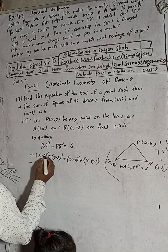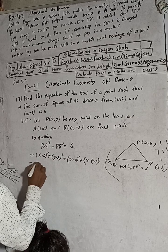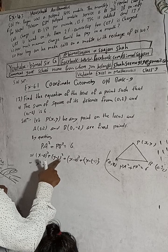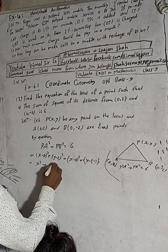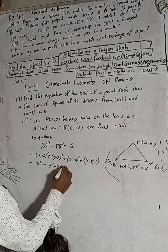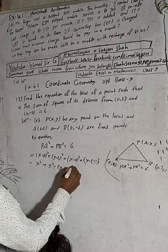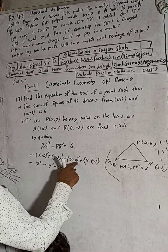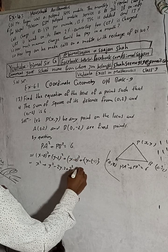Expanding: x minus 0 is x, so x squared. Then plus (y - 2) squared. Using the formula (a - b)² = a² - 2ab + b², this gives y² - 2 × y × 2 + 2², which is y² - 4y + 4. Then plus x squared again.